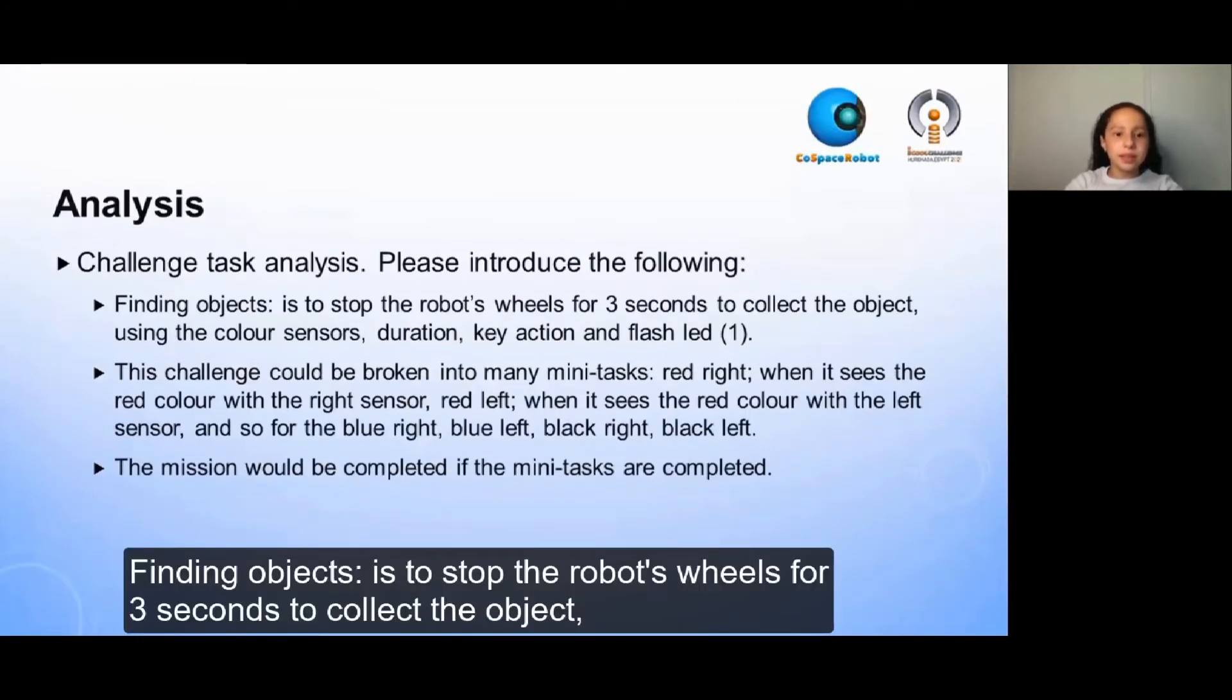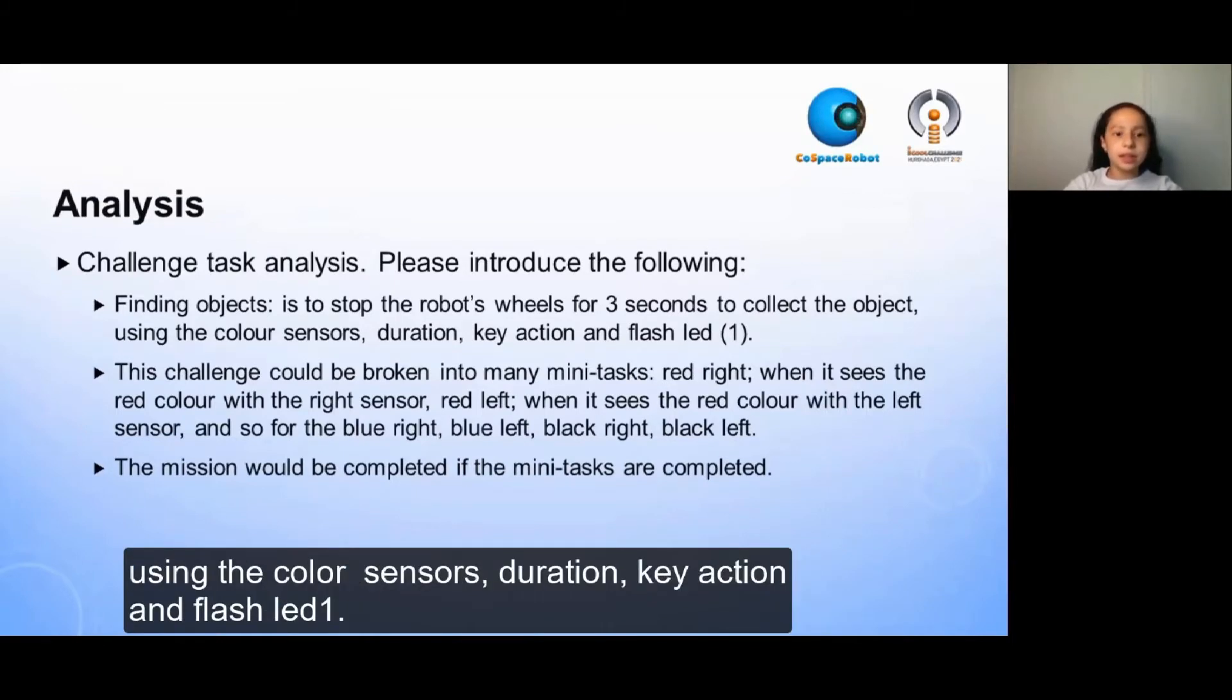Finding objects is to stop the robot's wheels for three seconds to collect the object using the color sensors, duration, key action, and flashlight one.